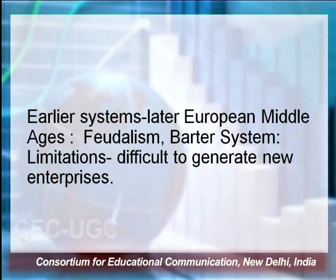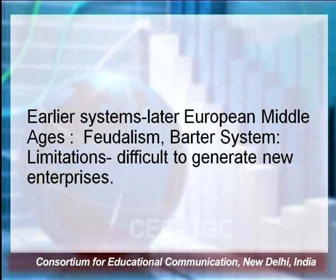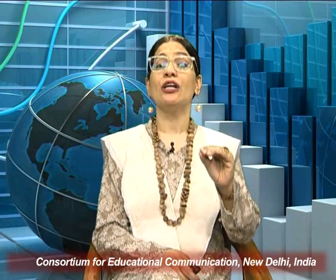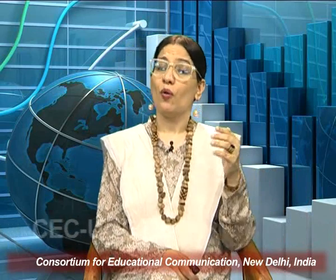In the earlier systems, looking at the later European middle ages, there was feudalism, and even earlier there was the barter system. But the limitations of these systems were that they were difficult to quantify — it was difficult to situate the ambit of economic activities in quantitative terms. There was also difficulty in generating new enterprises, as earlier models like barter system and feudalism were incoherent. This paved the way for the world to move towards an economic model focused on private property, private enterprise, and the bigger framework of profits.